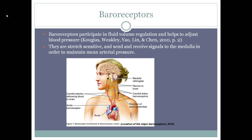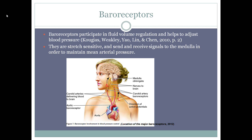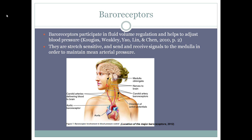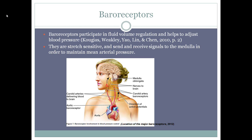Baroreceptors participate in fluid regulation by the kidney, and hence have the potential to adjust blood pressure. Baroreceptors are stretch-sensitive fibres located in the aortic arch and each of the carotid sinuses. They provide afferent signals to the medulla, which maintains mean arterial pressure. An increase in mean arterial pressure stimulates baroreceptors, leading to a decrease in sympathetic outflow to the heart and peripheral vessels, restoring mean arterial pressure to normal levels. If mean arterial pressure decreases, the opposite occurs and sympathetic outflow signals increase. Baroreceptors are engaged at normal resting blood pressure, indicating an ongoing level of baroreceptor reflex activity — a cardiac output process occurring via the CNS as a feedback system involving the brainstem, hypothalamus, and medulla.